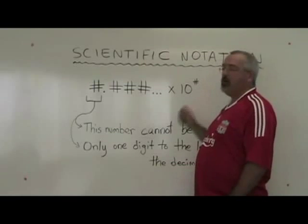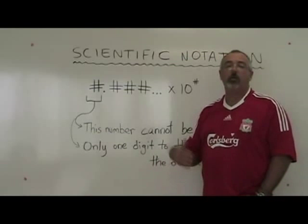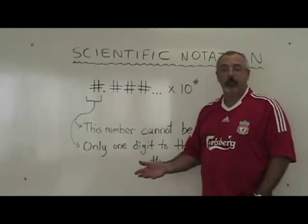Multiplying by ten to the power of a number means you're multiplying by one thousandth, or by a hundred, or by a million, a power of ten.